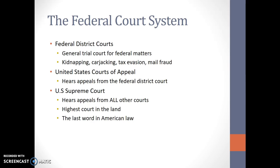The federal court system has three levels. There's the district courts, the circuit courts or the Court of Appeals, and the U.S. Supreme Court. The federal district courts deal with federal crimes — kidnapping, carjacking, tax evasion, mail fraud. Remember, the federal government controls the post office, so even minor things like ripping down someone's mailbox is technically a federal offense that would go to a federal court.